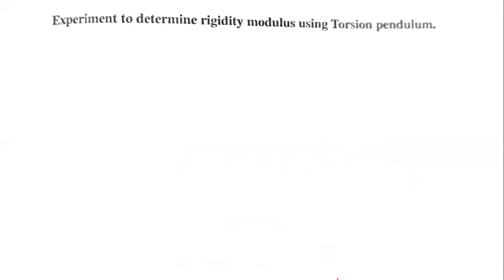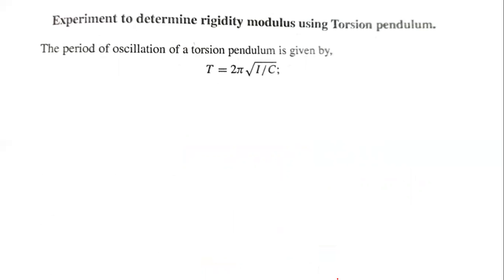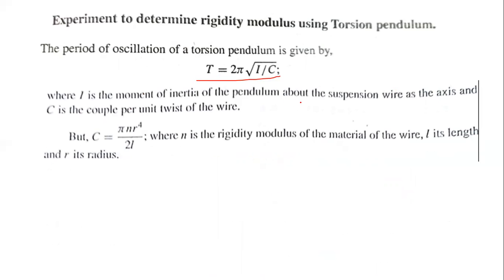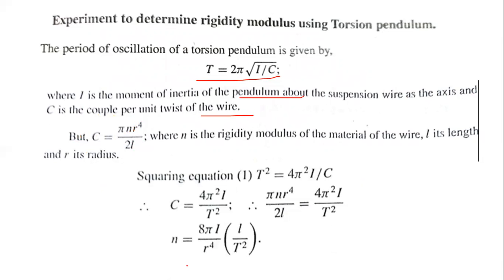This is the experiment. The period of oscillation is given by the time period formula involving the moment of inertia of the pendulum about the suspension wire axis, and C is the couple per unit twist of the wire. C is expressed as pi n r to the 4th divided by 2L, which we substitute to calculate the rigidity modulus n.